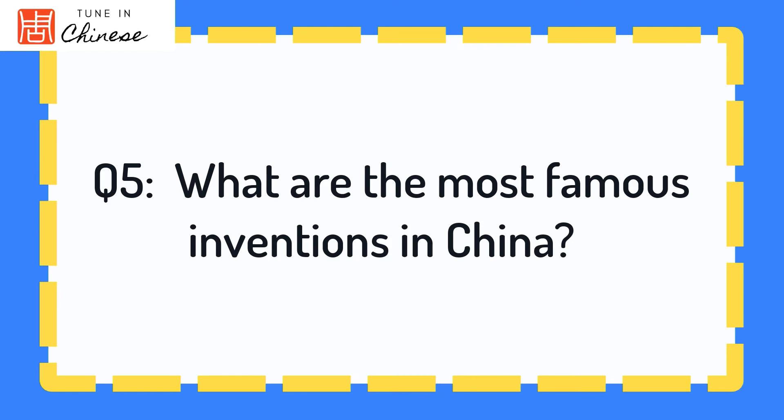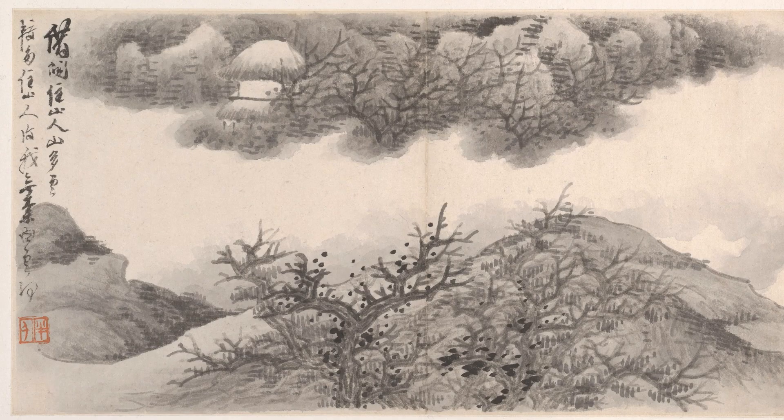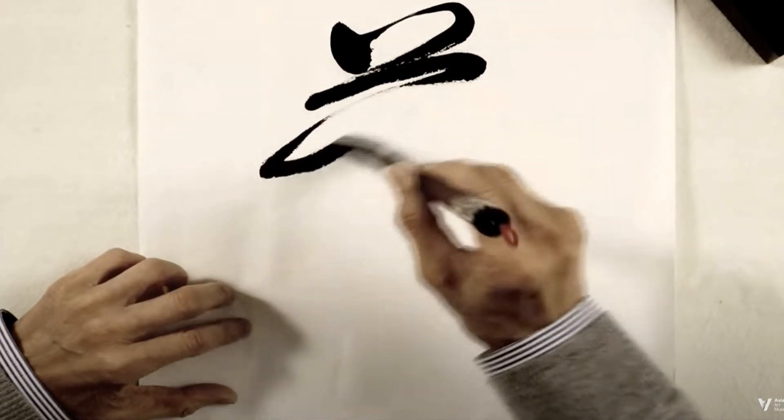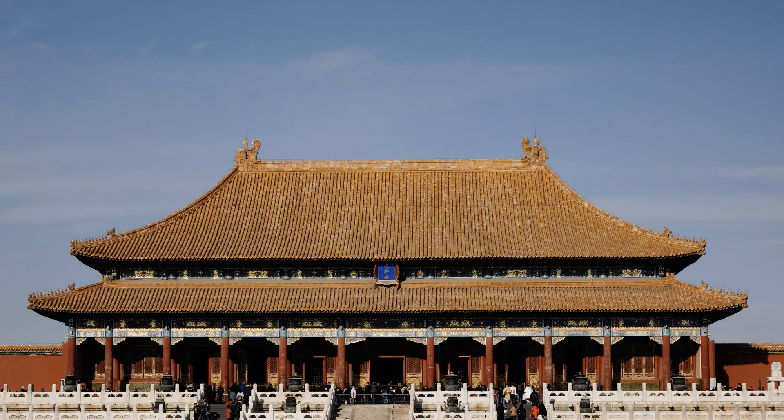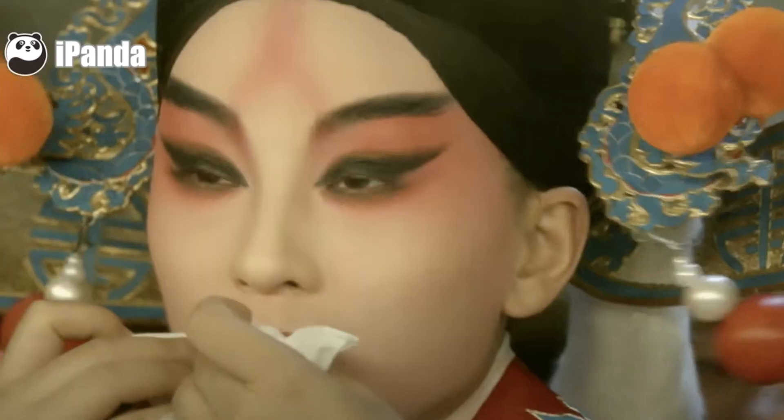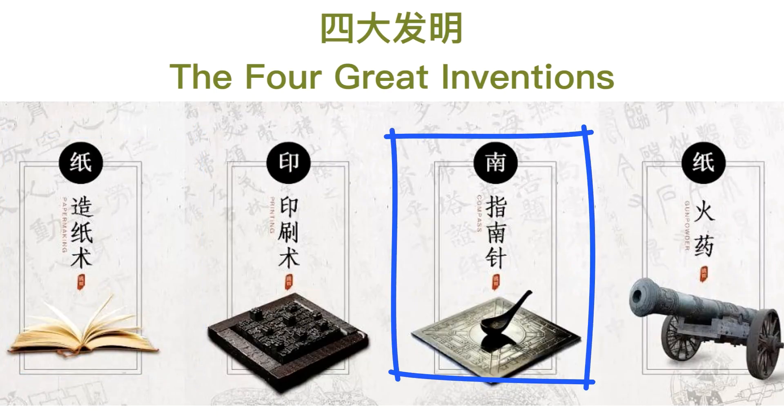Question number 5: What are the most famous inventions in China? China has a history of almost 5,000 years, so there are a lot of beautiful things invented and created by Chinese people. To name a few — there is amazing calligraphy art, delicious food, and amazing architecture like the Forbidden City and the Great Wall of China. But there are four great inventions worth mentioning in the history of technology: paper making, the compass, gunpowder, and printing. I'll attach a link below if you would like to know more about the four great inventions of China.